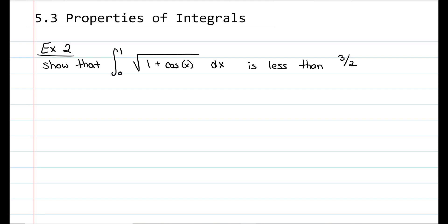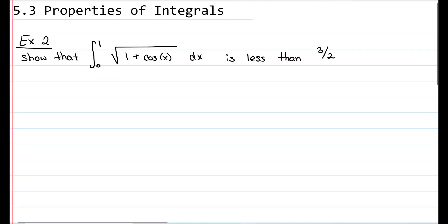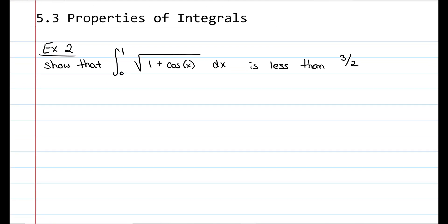Example 2. We want to show that the integral from 0 to 1 of the square root of 1 plus cosine of x dx is less than 3 halves. This is going to be very similar to when we did derivatives and used the squeeze theorem. We want to show that the area underneath this curve is less than 3 halves.